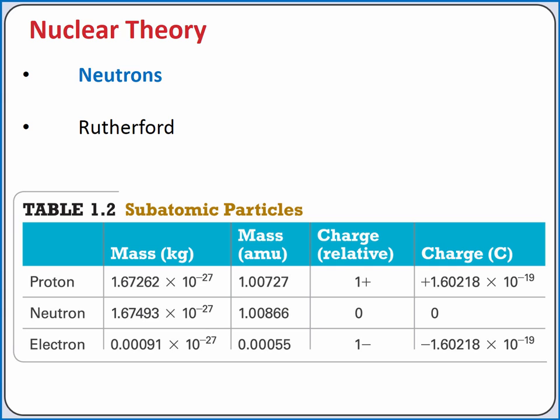So our protons and neutrons are roughly the same size, and they account for the vast majority of the mass of the atom, while electrons are much smaller.